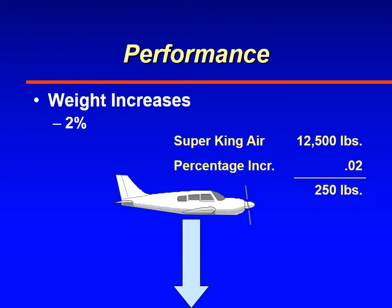Weight increased also, but only about 2 percent. They estimated that with an inch of ice on the aircraft, the percentage increase in weight was about 2 percent. For a Super King Air weighing 12,500 pounds, a 2 percent increase means only about 250 pounds — about the same as adding one or two people to the airplane. For a large airplane, that's not a big problem. A lot of people think weight is the biggest increase, but actually it's not.